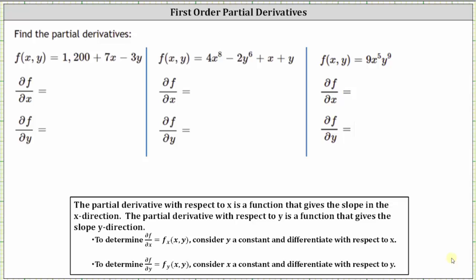We're asked to find the partial derivatives of the given functions. The partial derivative with respect to x is a function that gives a slope in the x direction, and the partial derivative with respect to y is a function that gives a slope in the y direction. To determine the partial derivative of f with respect to x, we consider y a constant and differentiate with respect to x. To determine the partial derivative of f with respect to y, we consider x a constant and differentiate with respect to y.